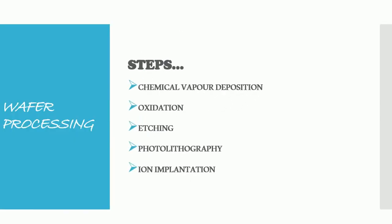The next step is wafer processing. This process is again subdivided into five steps: chemical vapor deposition, oxidation, etching, photolithography, and ion implantation.